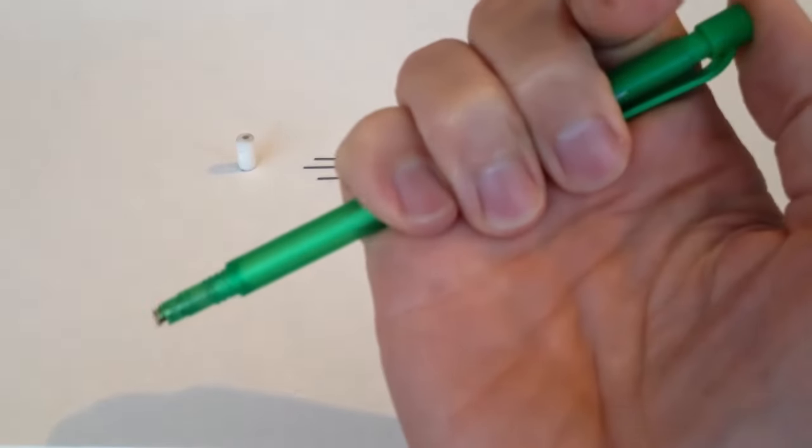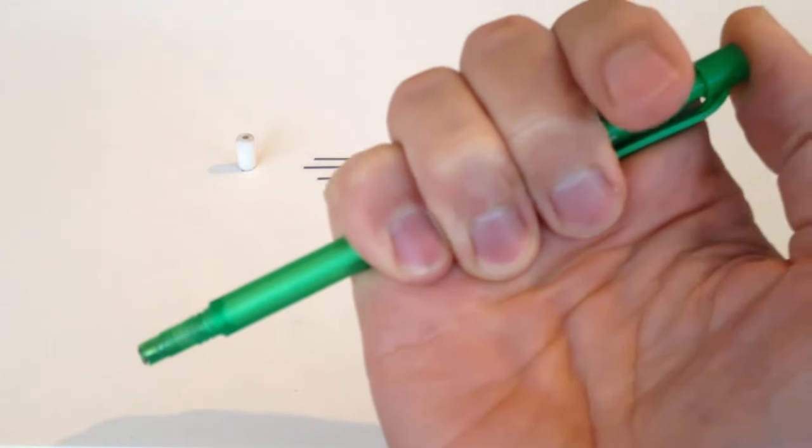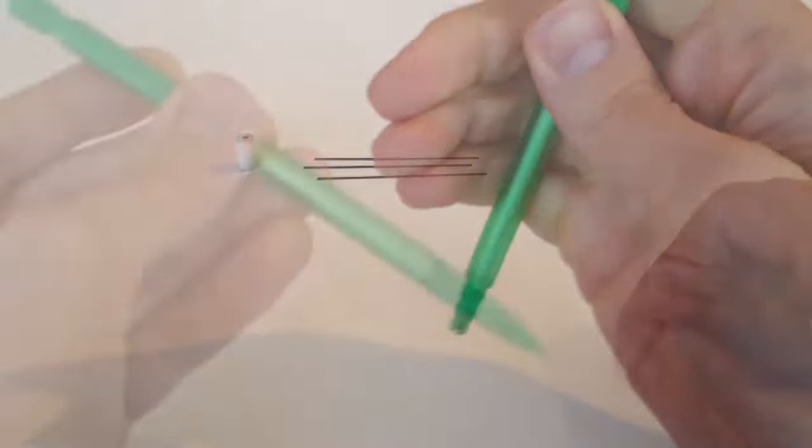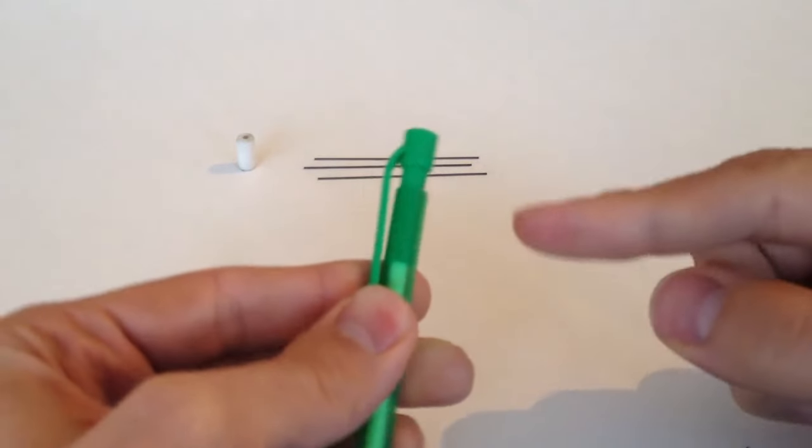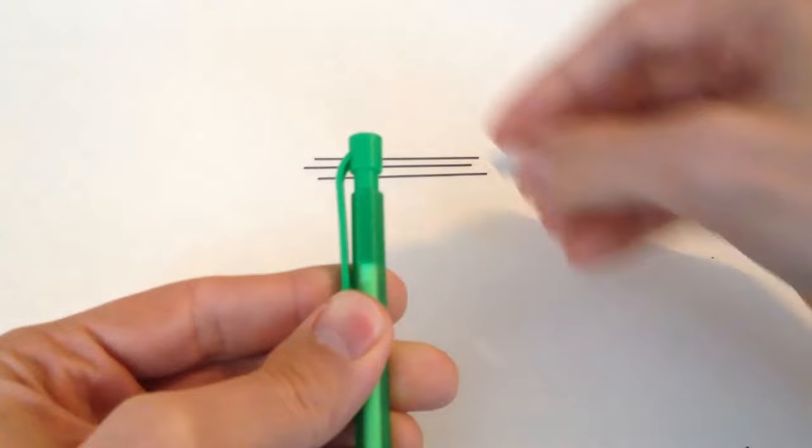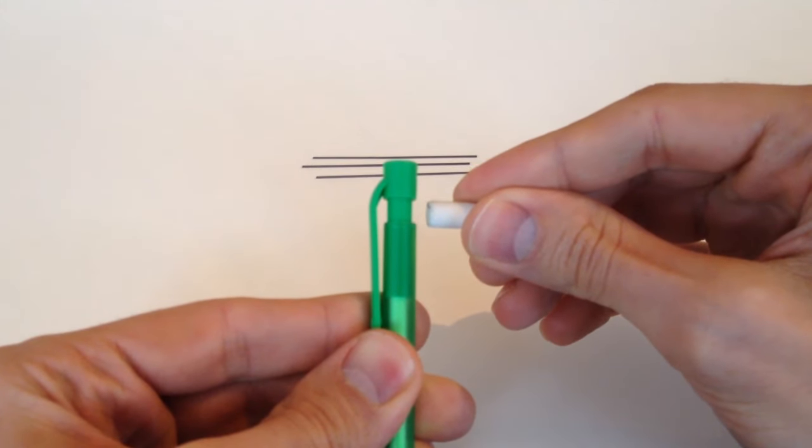Test that it is properly connected by pressing the lead advance unit and see the chuck advance and retract. When properly connected, the thrust tube should be exposed about a quarter inch, which is the thickness of the eraser.